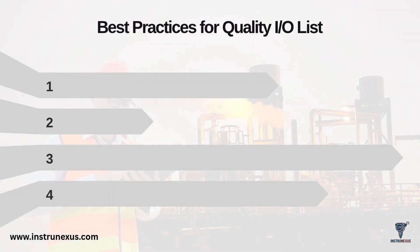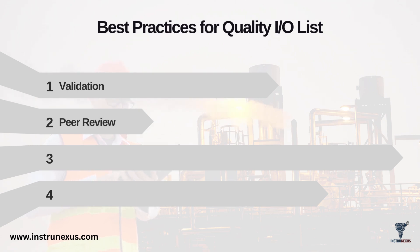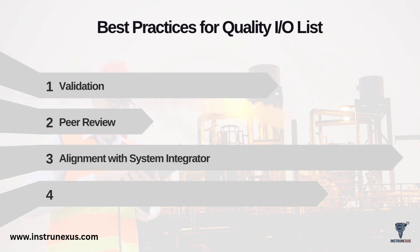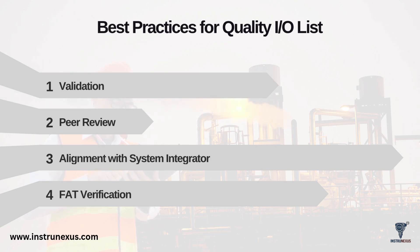How do we guarantee a high-quality, error-free IO List? By following a strict multi-step quality process. Step one is validation: the engineer validates the list against all input documents – the P&IDs, the instrument index, the control narratives. Step two is peer review: a colleague or senior engineer reviews it, as a fresh set of eyes is invaluable for catching small mistakes. Step three is alignment with the system integrator: a formal review with the DCS or PLC vendor, who checks the list against their hardware standards and addressing philosophy. Step four is FAT verification – the final and most important test. During the factory acceptance test, you use the IO List as a script to physically test every single point, proving that the as-built system matches the as-designed document.